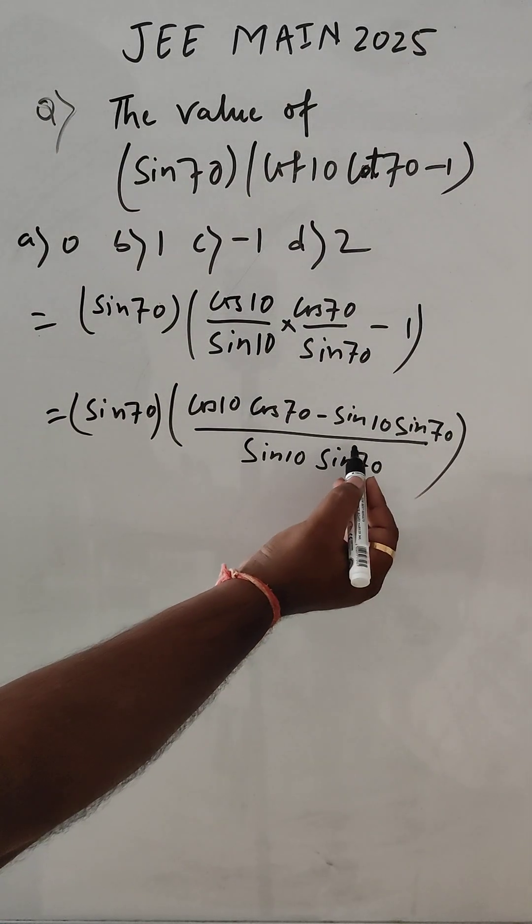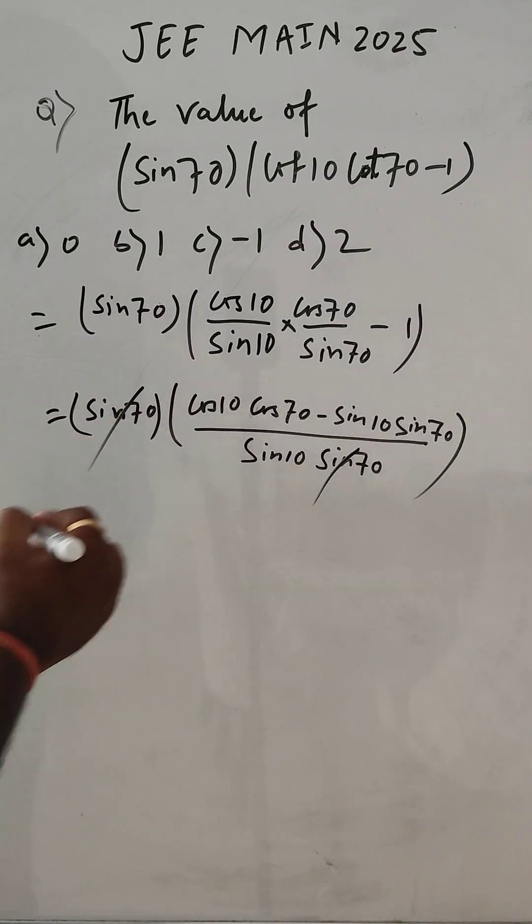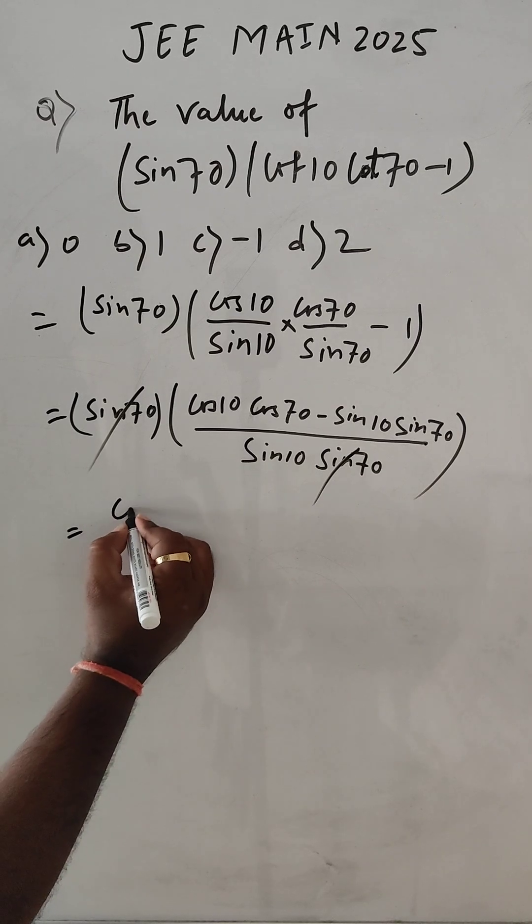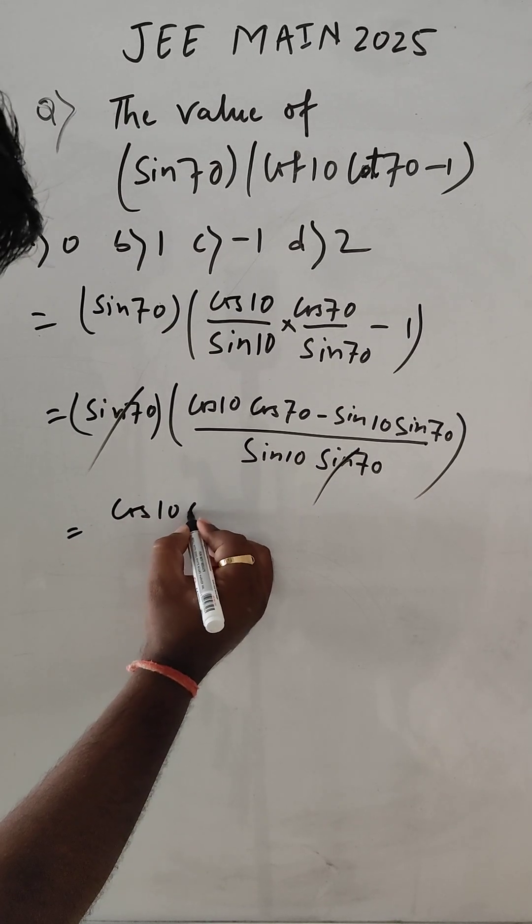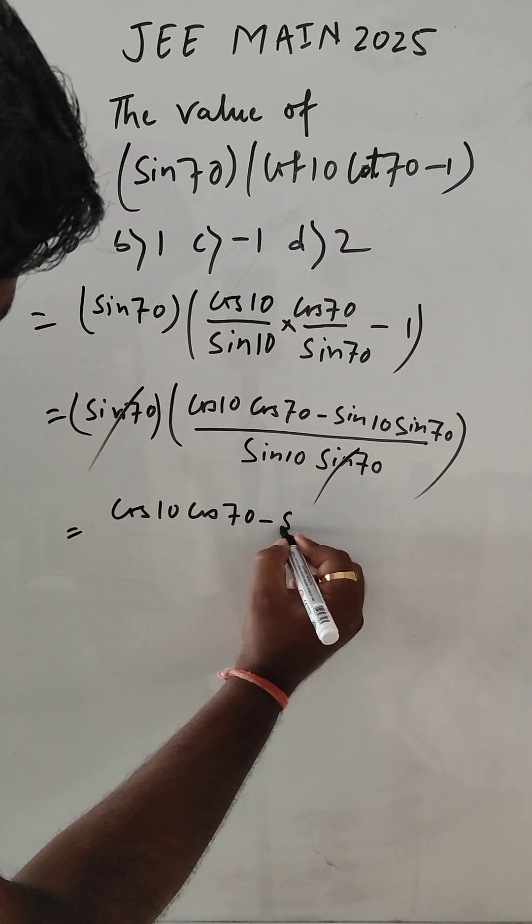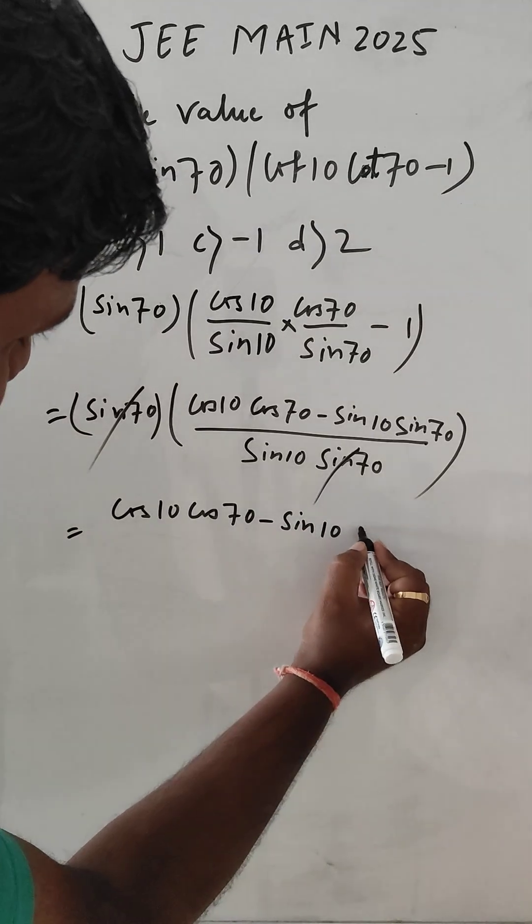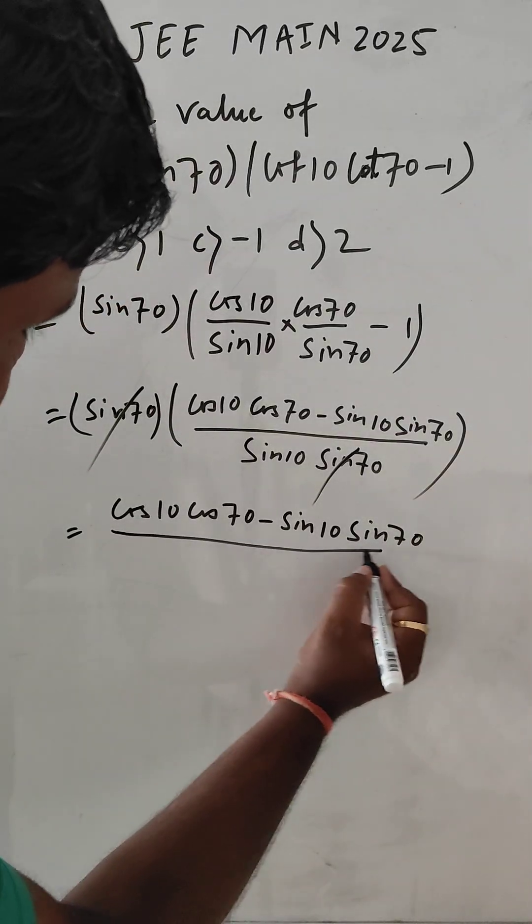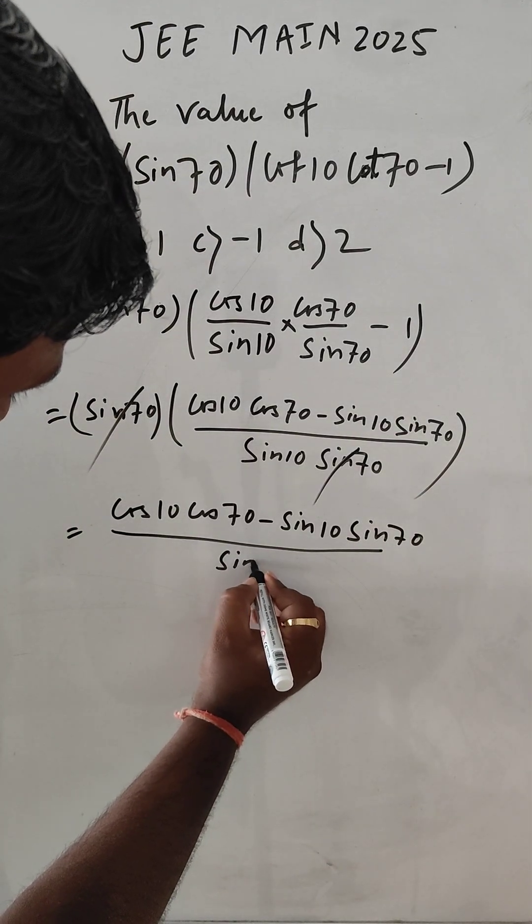So now this sin 70 can be cancelled. What we have? We have cos 10 cos 70 minus sin 10 sin 70 by sin 10.